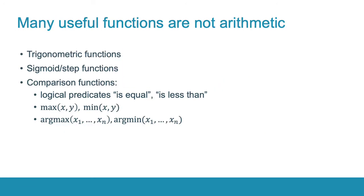The existing HE schemes naturally support evaluation of arithmetic circuits. In other words, they can compute polynomials. But many practically useful functions are not arithmetic, so they should be somehow approximated to polynomials of reasonable degree. In this work, we focus on comparison functions such as logical predicates is-equal, is-less-than, and maximum-minimum functions. We will show how to speed up evaluation of such functions.